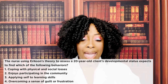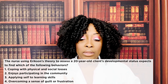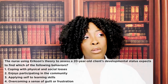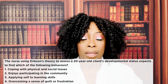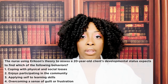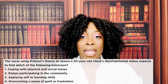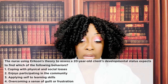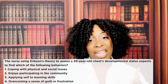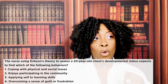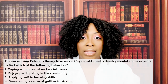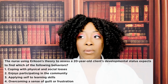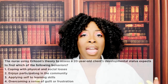The wrong answer choices: one, coping with physical and social losses — we see this more in the older age, integrity versus despair. Choice three, applying self to learning new skills — we see this around ages six to eleven in the industry versus inferiority stage, where they're learning where they fit in the classroom. Choice four, overcoming a sense of guilt — that's initiative versus guilt, around ages three to six, when they want to do things for themselves and may develop guilt if they fail repeatedly.